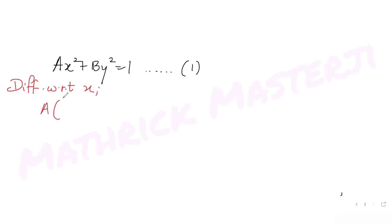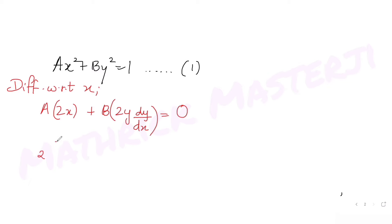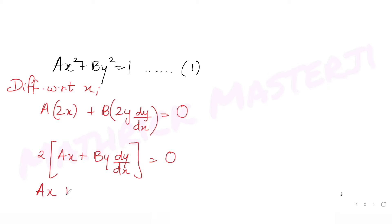Differentiating ax² + by² = 1 with respect to x: the derivative of x² is 2x, derivative of y² is 2y·(dy/dx), and derivative of 1 is zero. Taking 2 as common, we get ax + by·(dy/dx) = 0. This is our equation 2.